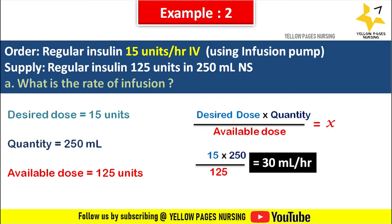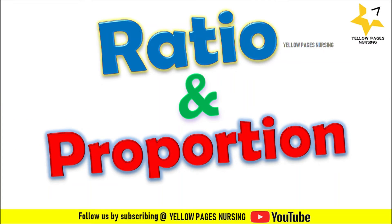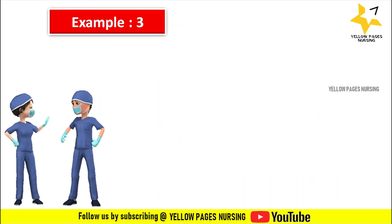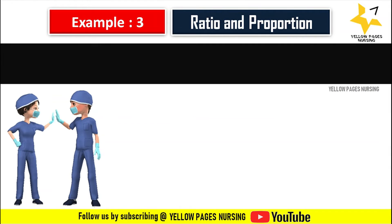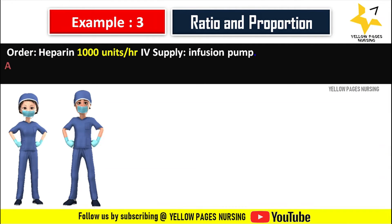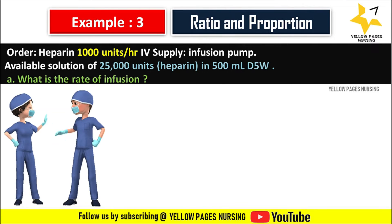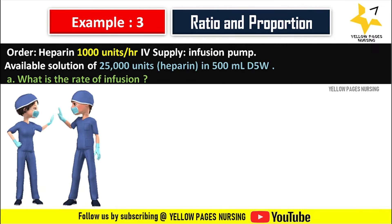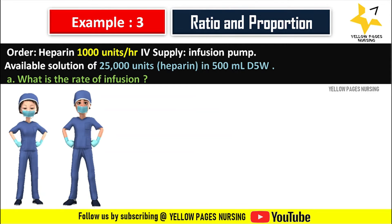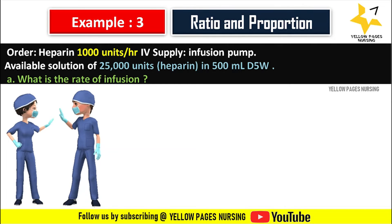Applying all values in the formula, we get 15 × 250 ÷ 125, which gives 30 ml per hour. We set 30 ml per hour in the infusion pump. Now using the ratio and proportion method, let's discuss the example: doctor's order is heparin 1,000 units per hour IV using infusion pump, available solution of 25,000 units heparin in 500 ml D5 water. What is the rate of infusion?